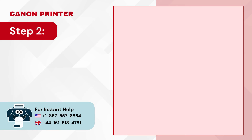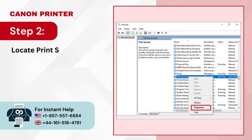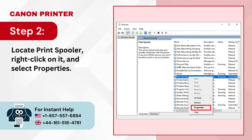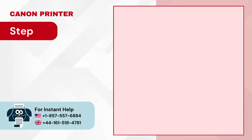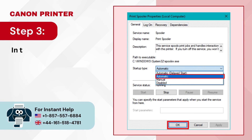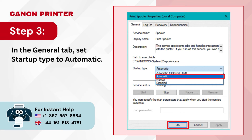Step 2 — Locate Print Spooler, right-click on it, and select Properties. Step 3 — In the General tab, set Startup Type to Automatic.